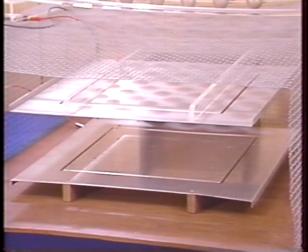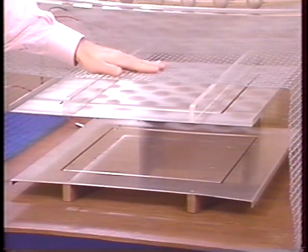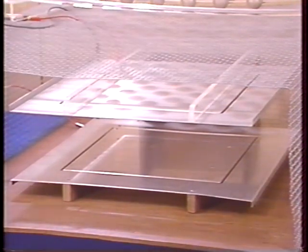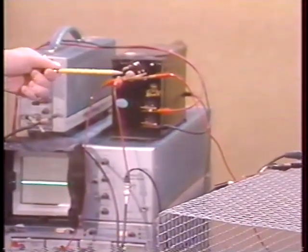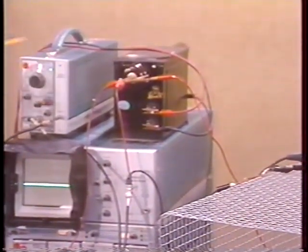The cage is grounded for shielding, and to keep us from touching the bottom electrode, it's driven to 400 volts RMS at 250 hertz by this transformer, which is itself driven by an oscillator and amplifier.